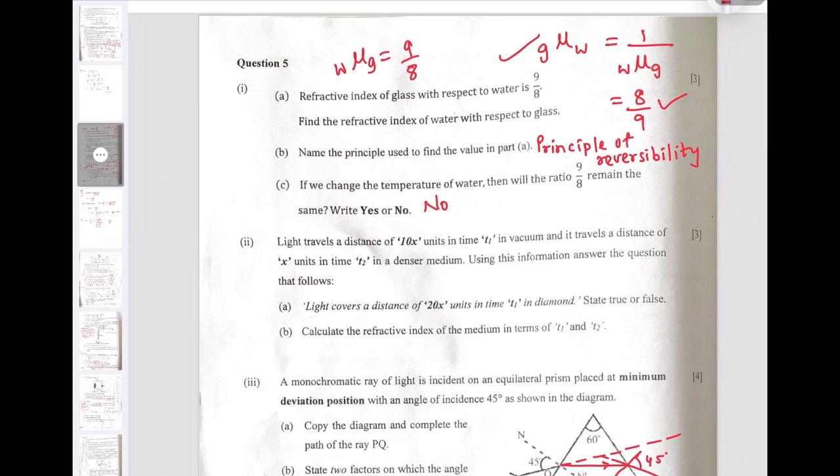Next question is: If we change the temperature of water, will the ratio 9 by 8 remain the same? The answer is of course no, because the refractive index of any material is dependent on temperature. If temperature changes, mu will change and hence this ratio will also change.